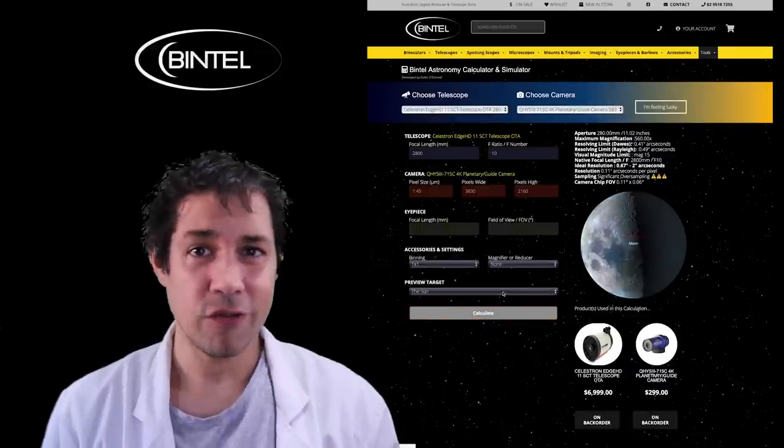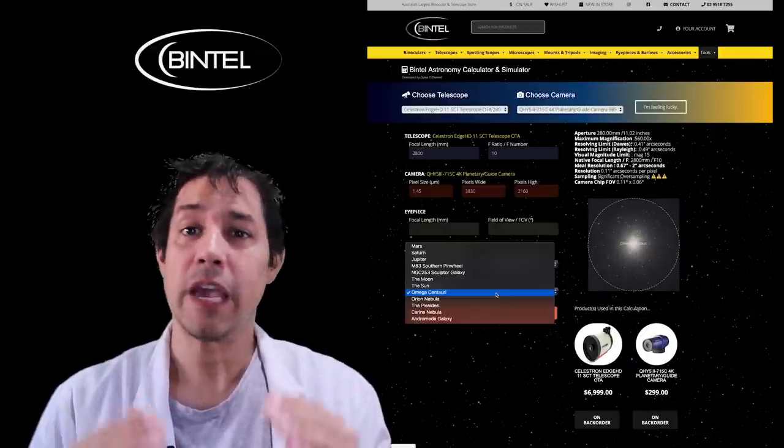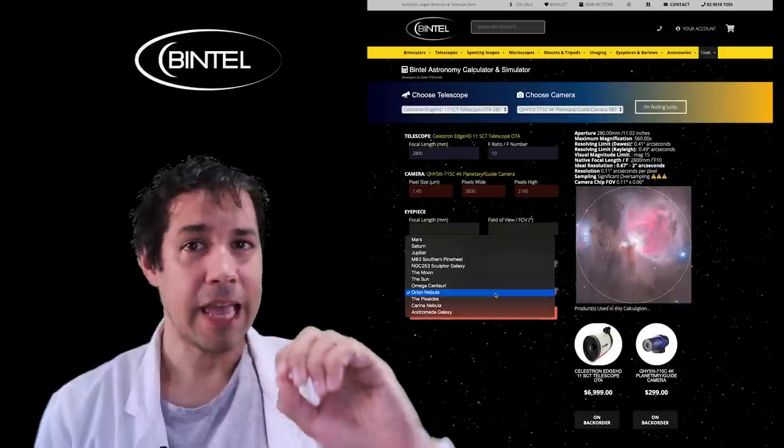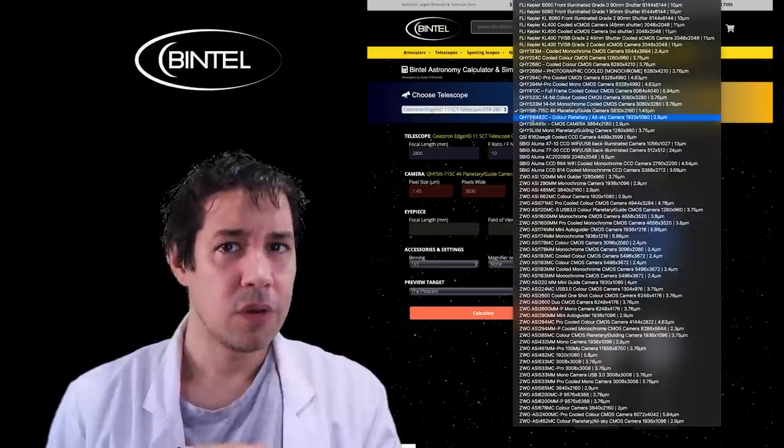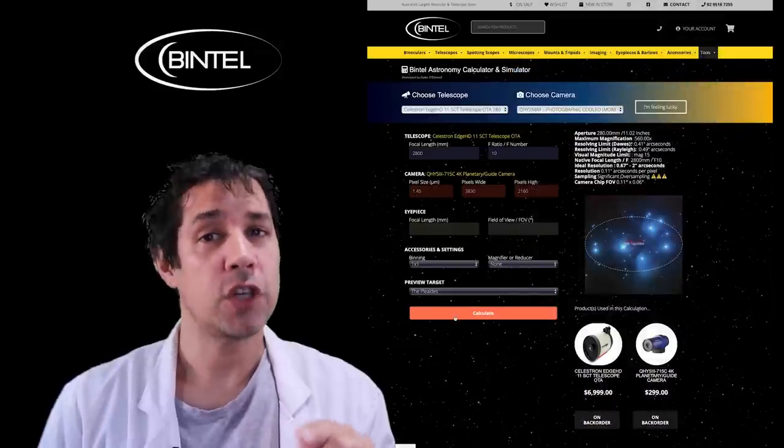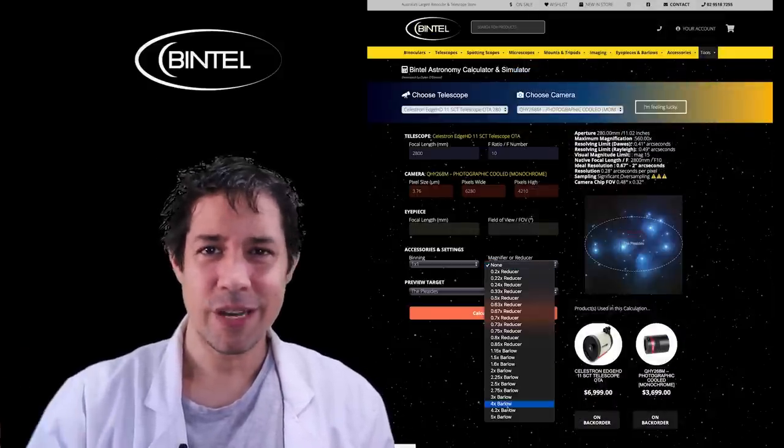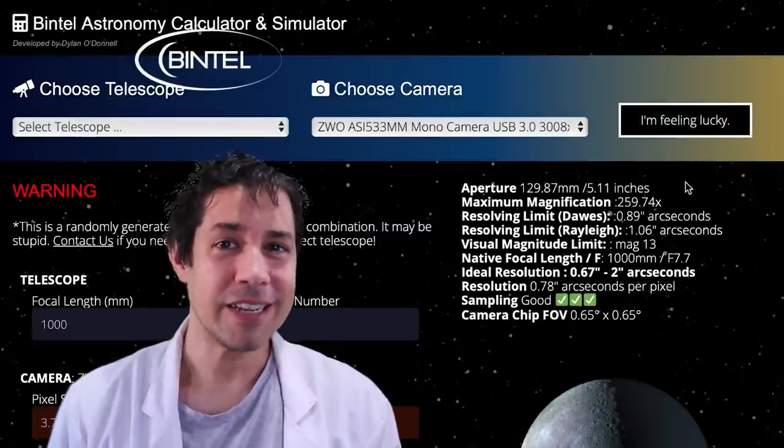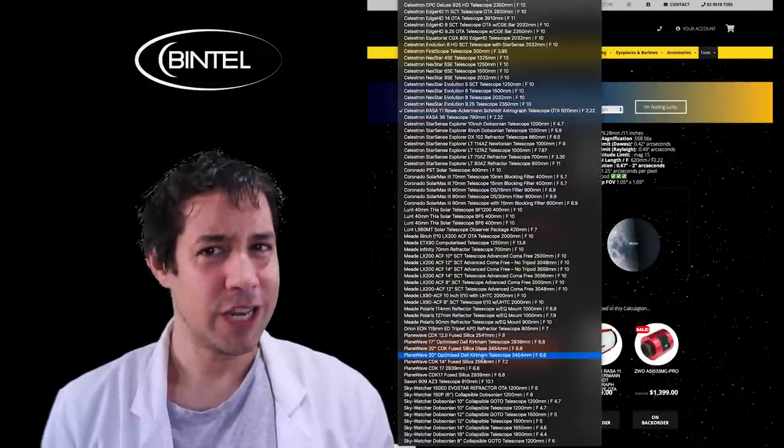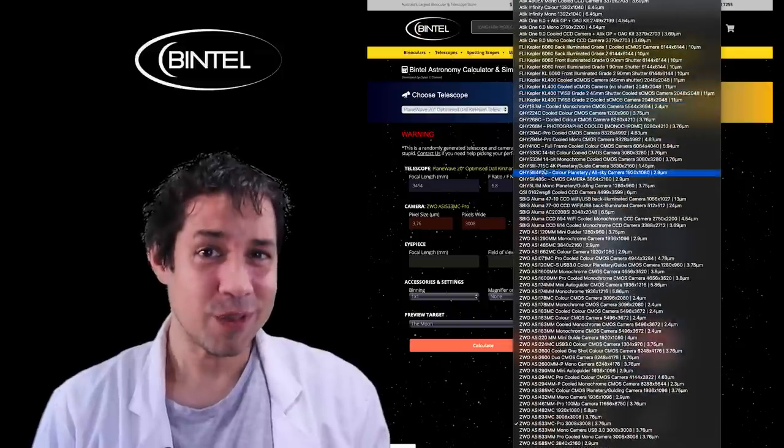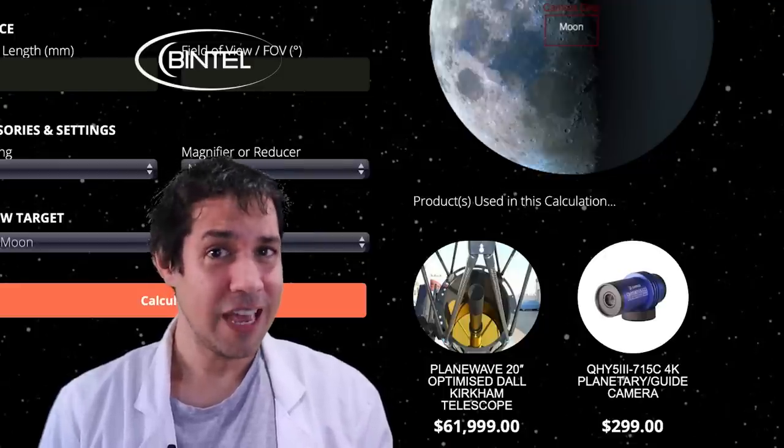And, more importantly, it does all the calculations for you so that you can see exactly how many arc seconds you see per pixel. And that's really important to determine whether the images that you get are going to be sharp, oversampled, or undersampled. Just for fun, I added this randomizer button. So you can click the I'm feeling lucky button and it will just generate a random combination of telescope and camera. And there are some crazy combinations. If you want to see what it's like to put this QHY 715C onto like a plane wave, you can. You shouldn't do that.